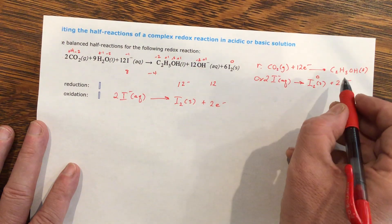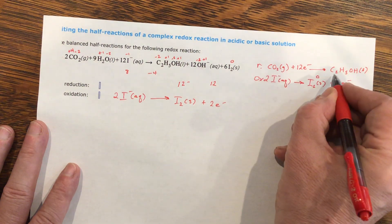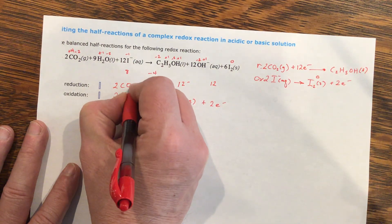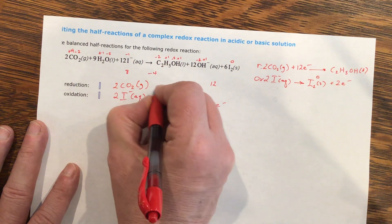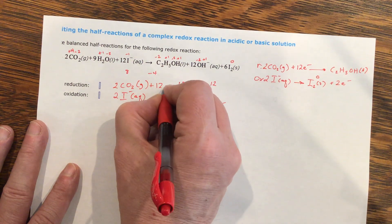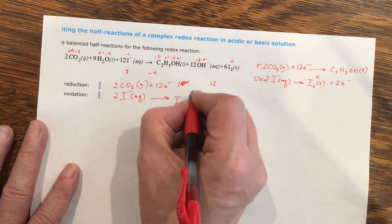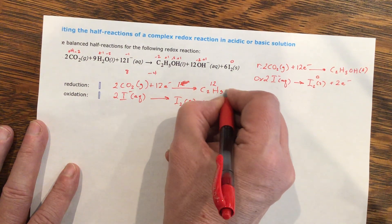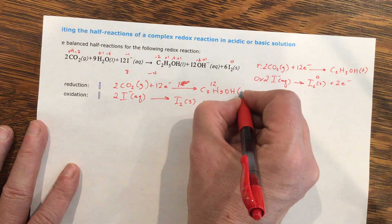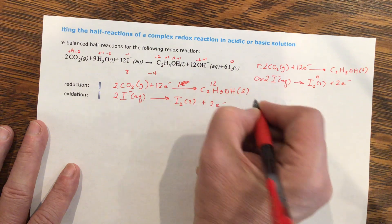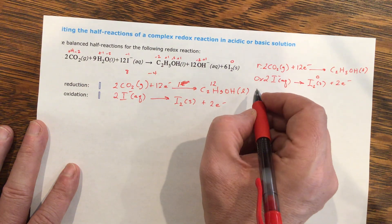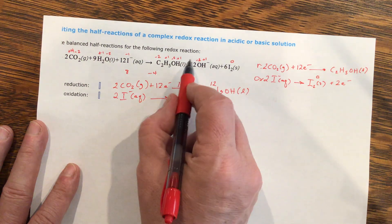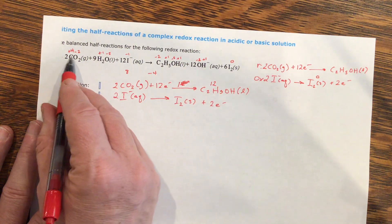Two, sorry, there's two here. I forgot. This is two carbon dioxide gas plus 12 electrons yields C2H5OH aqua, no, is that aqua's? Plus, all right, so on this side, I've got waters. I need water on this side. Sorry.